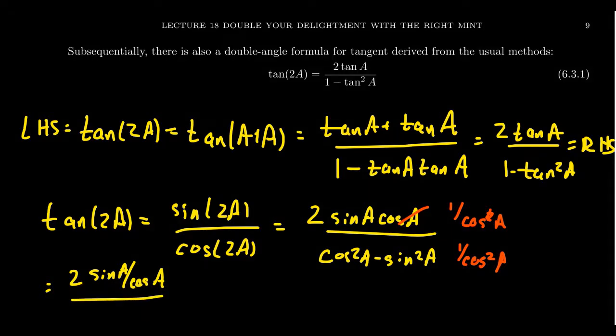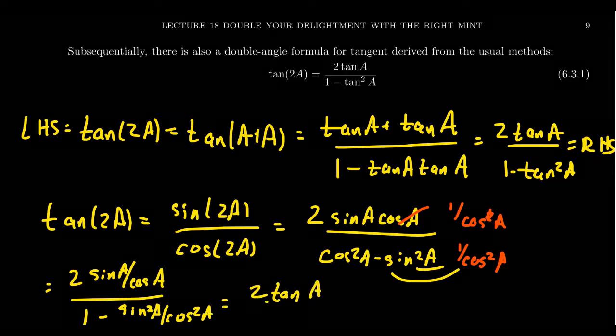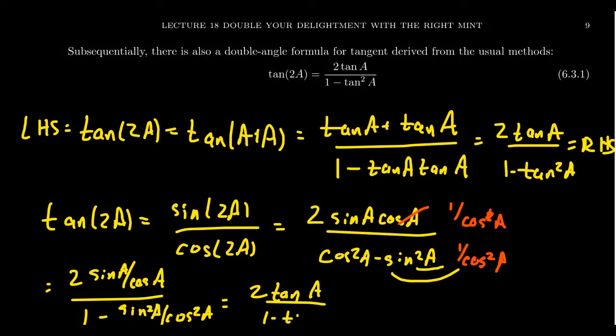Then in the denominator, you'll distribute this thing. Cosine squared over cosine squared is going to give you a 1, and then you get sine squared over cosine squared. Whoops, my handwriting's getting a little sloppy there. Sorry about that. Cosine squared a. For which then that gives you 2 tangent a over 1 minus tangent squared a.